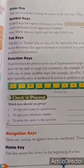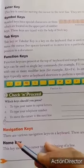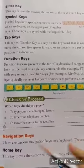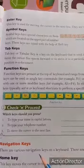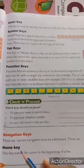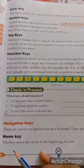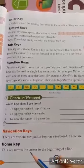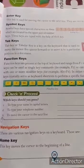Next heading is Navigation keys. Navigation keys means those keys that show direction — दिशा दिखाने के लिए जो keys use होती हैं। Navigation का मतलब direction ही होता है। There are various navigation keys on our keyboard — keyboard पर अलग-अलग प्रकार के navigation keys होते हैं। Home key: this key moves the cursor to the beginning of a line — Home key cursor को line के बिलकुल शुरुआत में लेकर आता है।